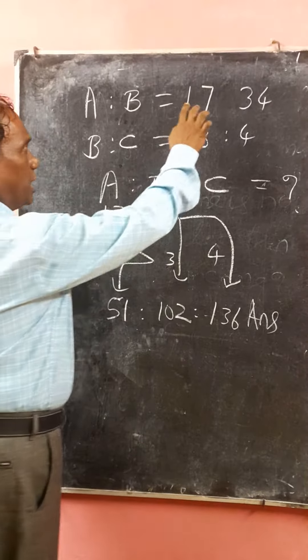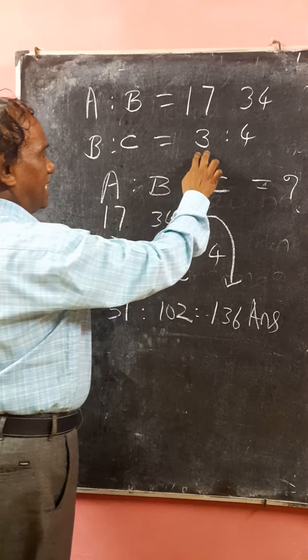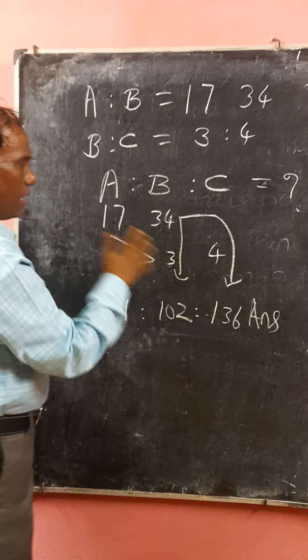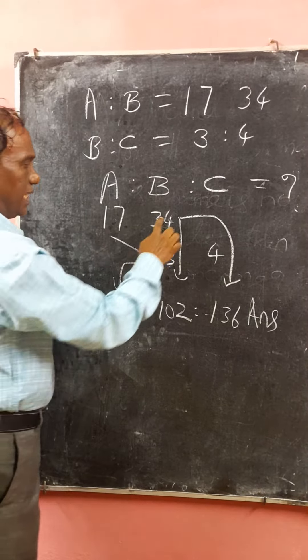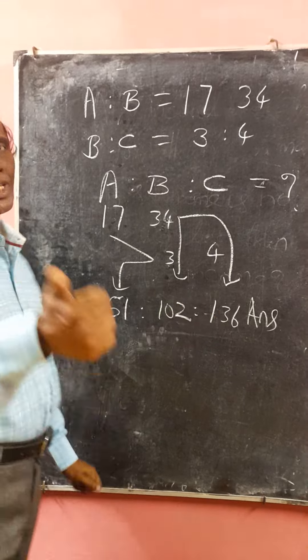A are below, 34 B are below, B are below, C is below. And the answer. All the best. Thank you.